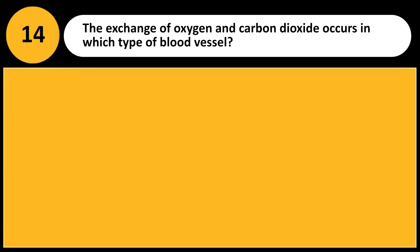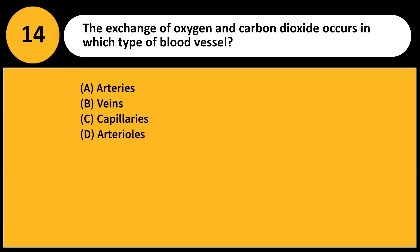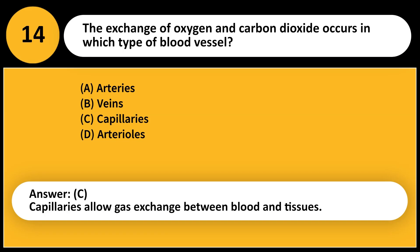The exchange of oxygen and carbon dioxide occurs in which type of blood vessel? A. Arteries. B. Veins. C. Capillaries. D. Arterioles. Answer: C. Capillaries allow gas exchange between blood and tissues.